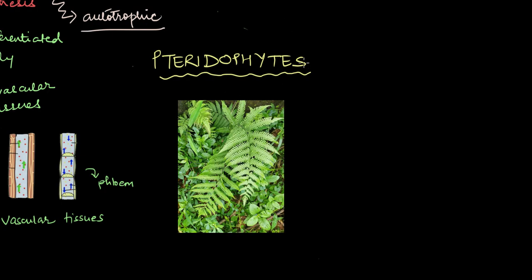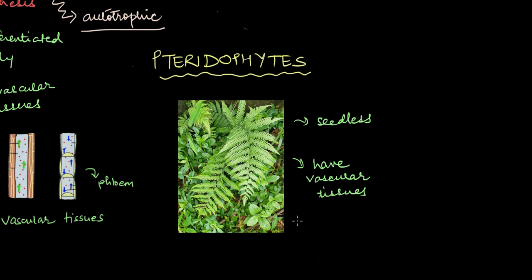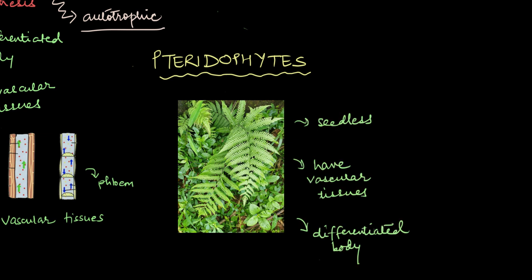Next in line are the pteridophytes, or division Pteridophyta, which includes plants like ferns, horsetails, and ground pines. They are also seedless, just like the bryophytes, but unlike them, pteridophytes have vascular tissues. Moreover, their bodies are differentiated into actual roots, stems, and leaves — not just the lookalikes we saw in bryophytes — just like the higher plants.